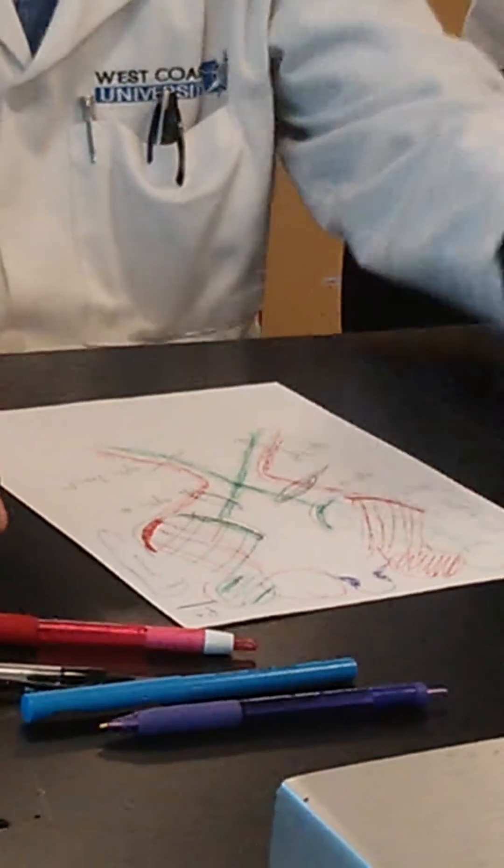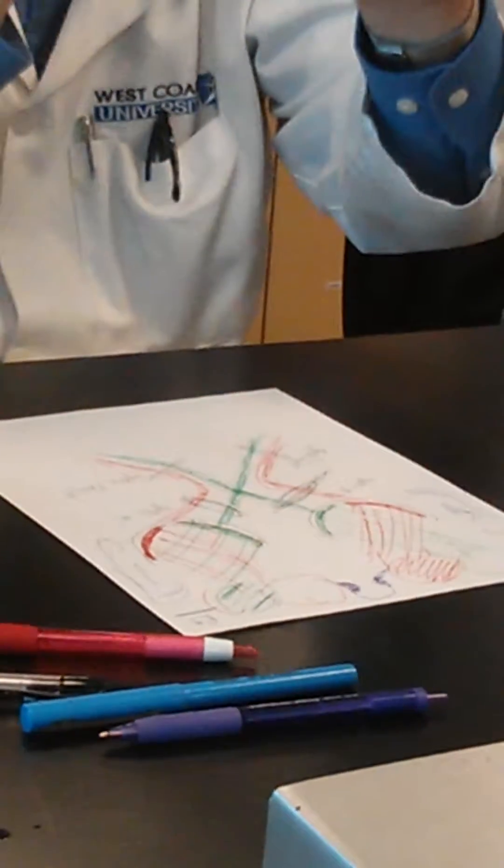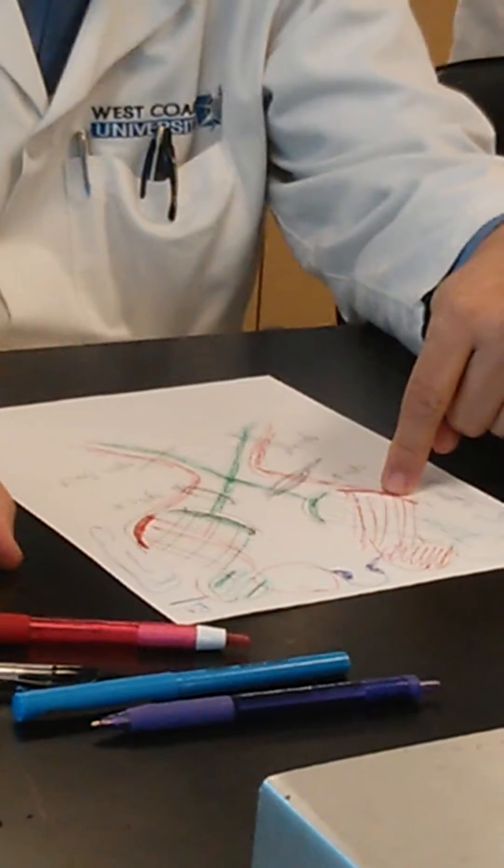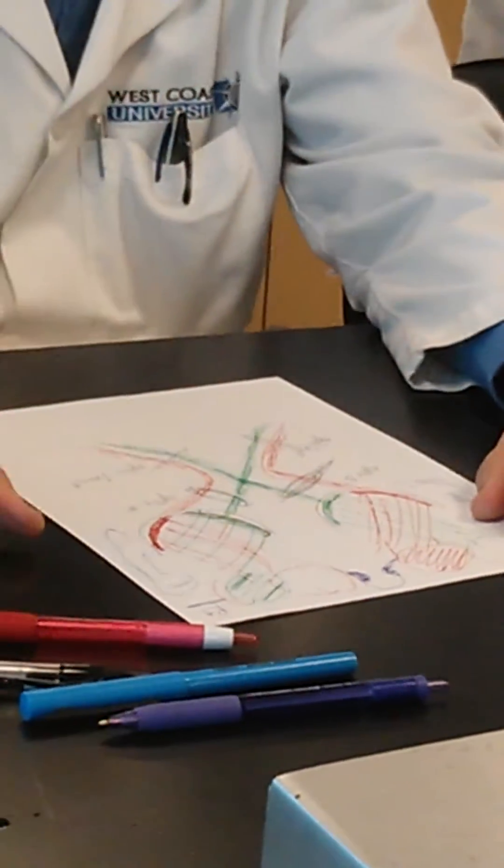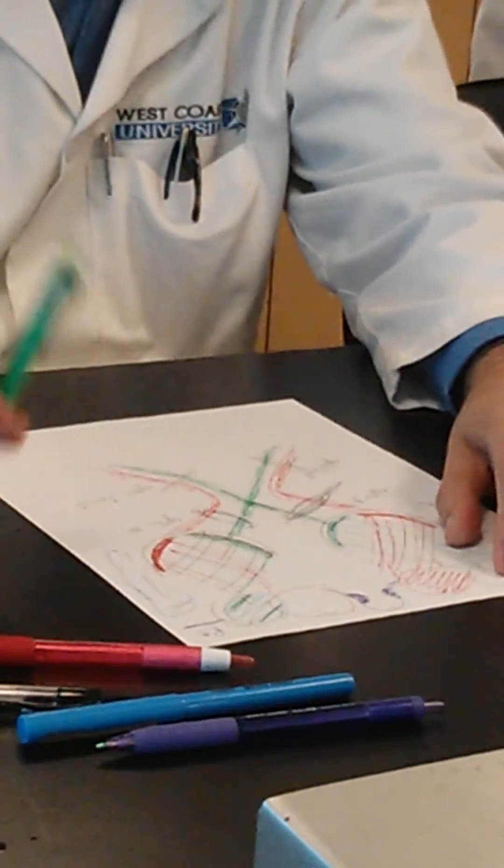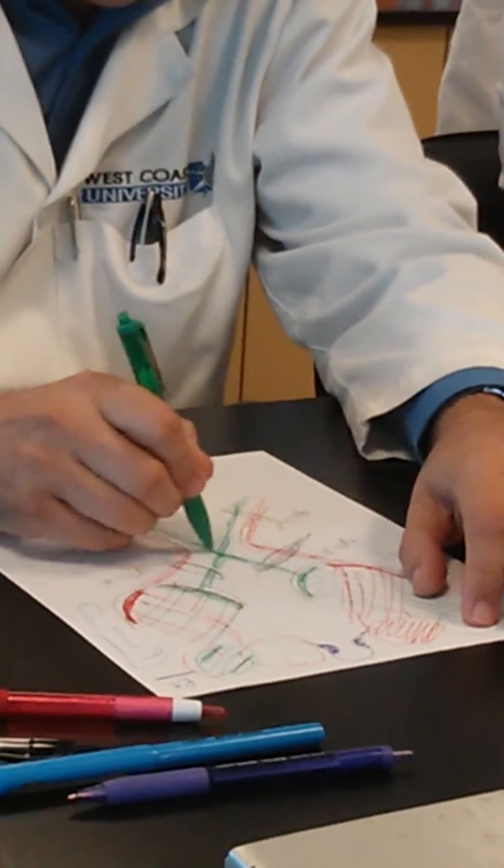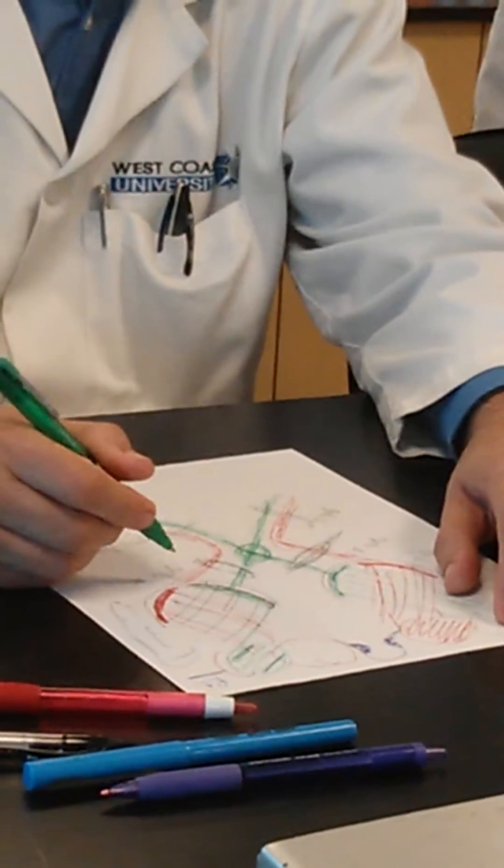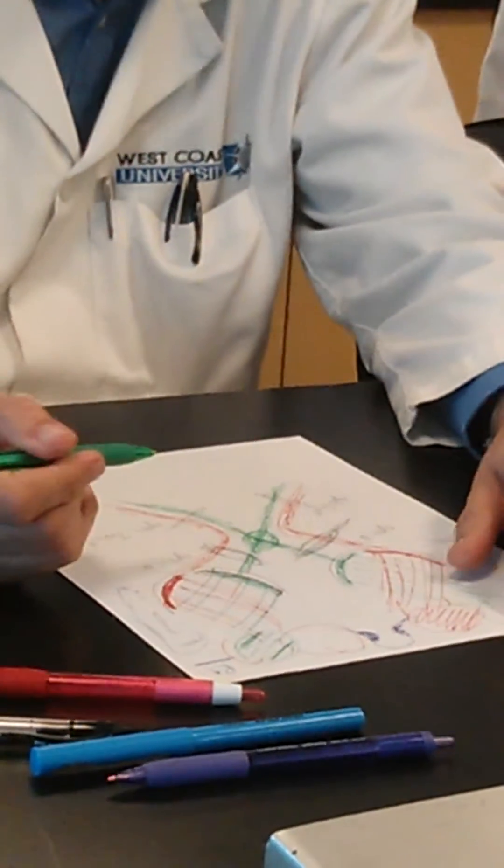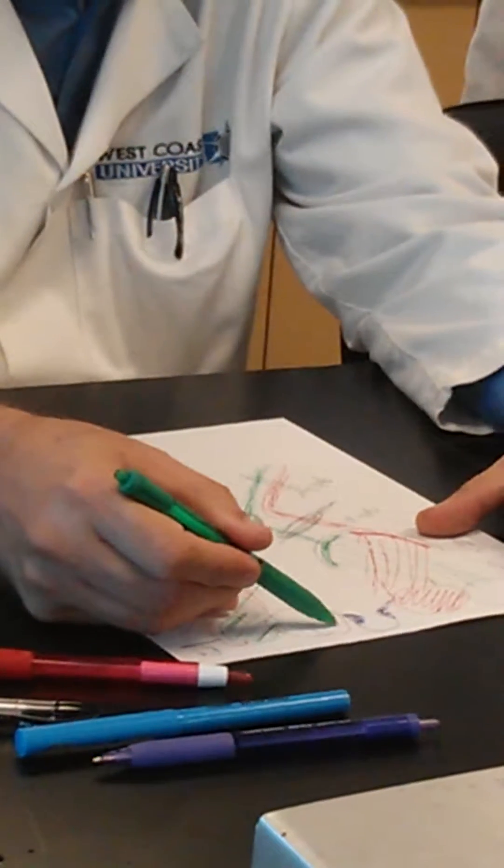It's going to see - yes, the nose is in the middle. Ipsilateral nasal, contralateral temporal. Now the more complex part: let's say the lesion is here at the optic chiasm.